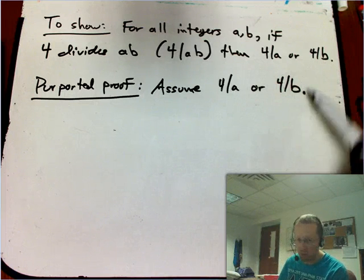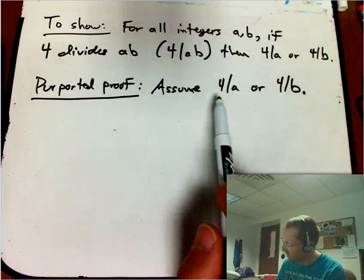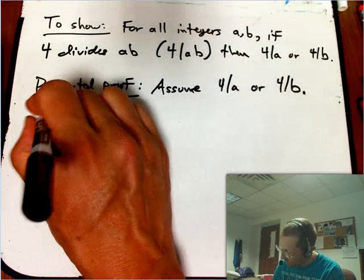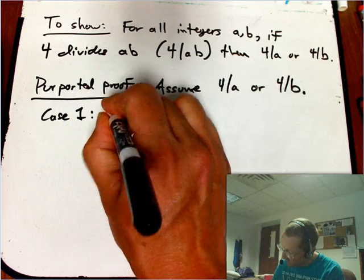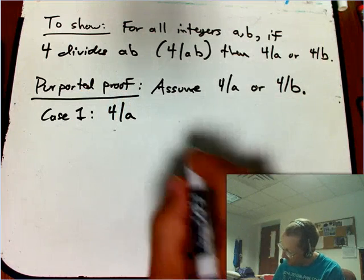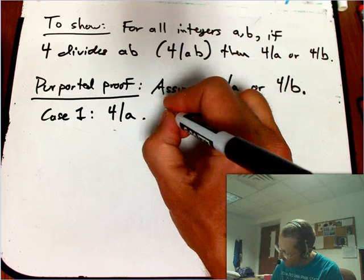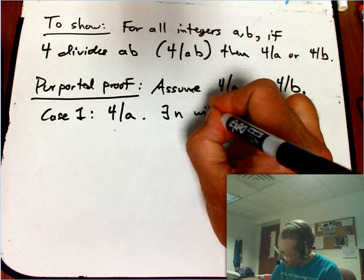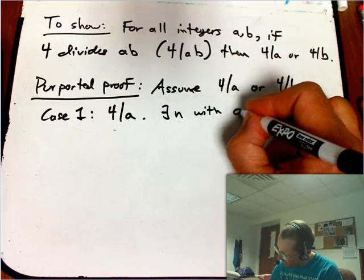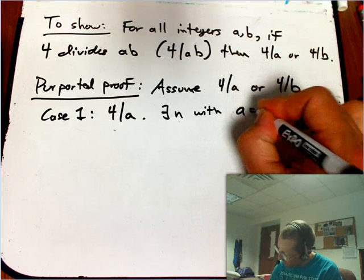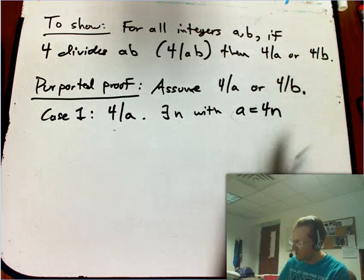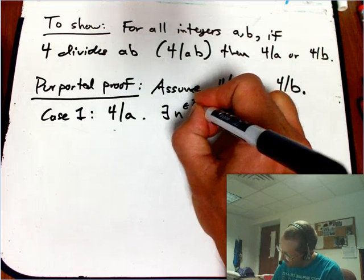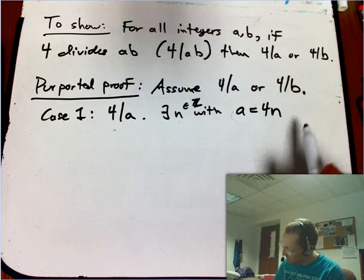Suppose we were reading a student's paper, trying to judge what's going on. Let's assume 4 divides a or 4 divides b. Well, that's two cases, that's a little annoying, but casework sometimes is absolutely necessary. Case 1 is that 4 divides a. So what does that really mean? It means that there exists, there exists n with a equal to 4 times n. That's what it means to say that 4 divides a.